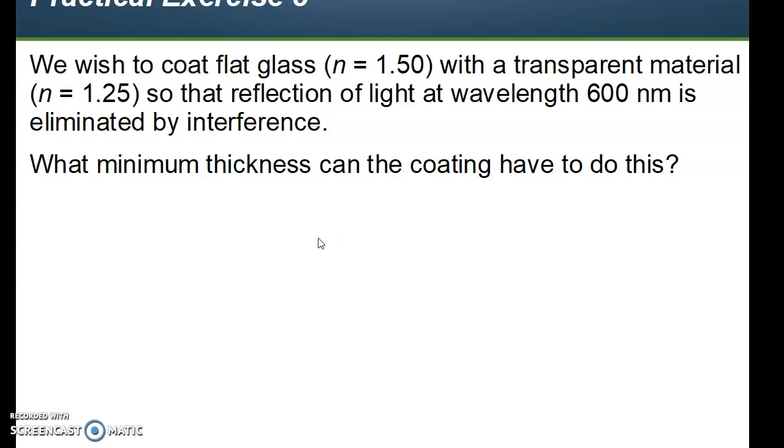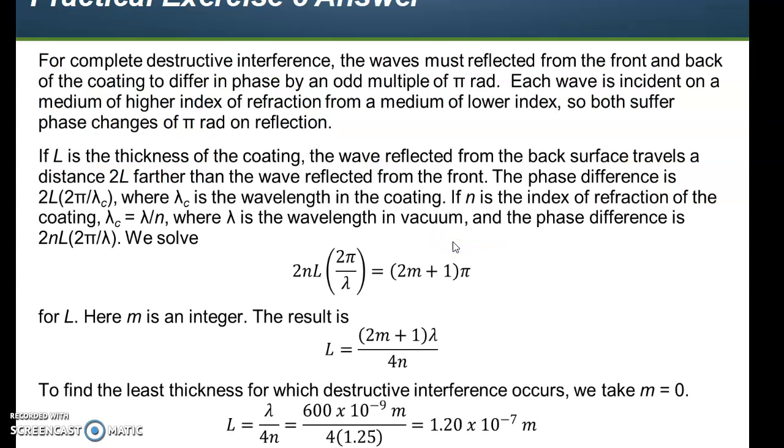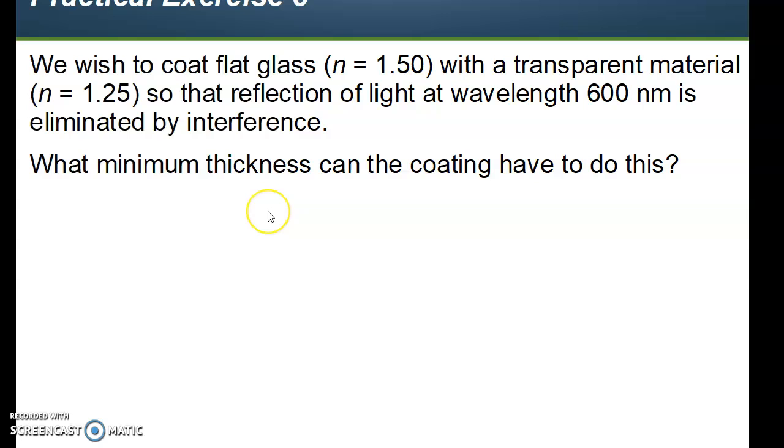Practical exercise number eight. This is problem number 35. Here you wish to coat a flat glass with a refractive index 1.5 with a transparent material, n equals 1.25, so that the reflection of light at wavelength 600 nanometers is eliminated by interference. What's the minimum thickness? What minimum can the coating have to do this? Essentially, when you're working with problems like this, this is how thick do you have to make that little coating that you put on your glass so that the police can't look inside your car or some other individual can't look inside.